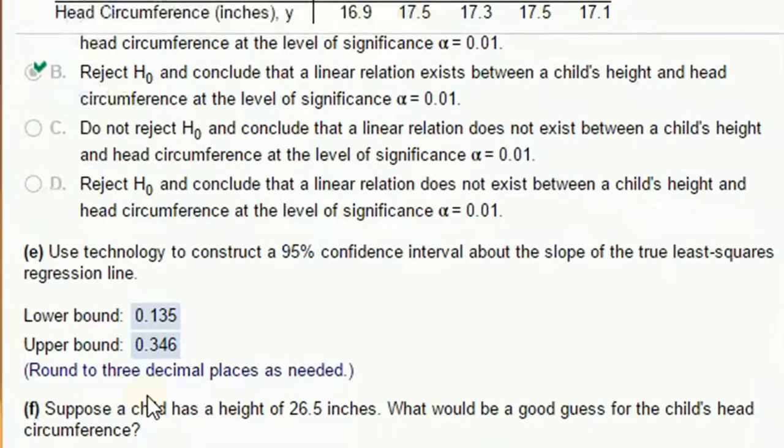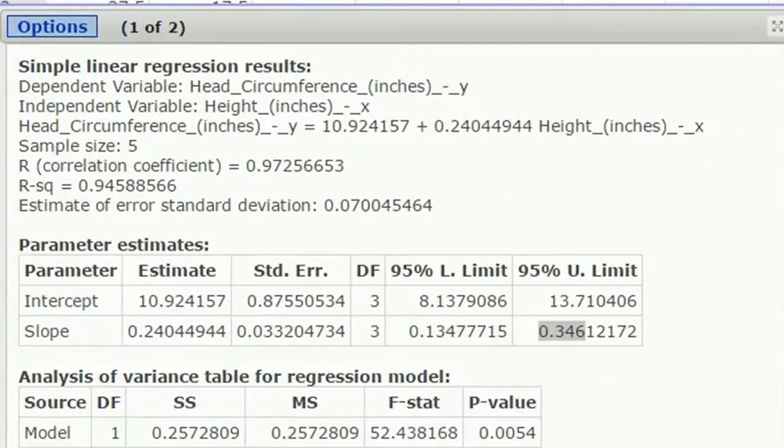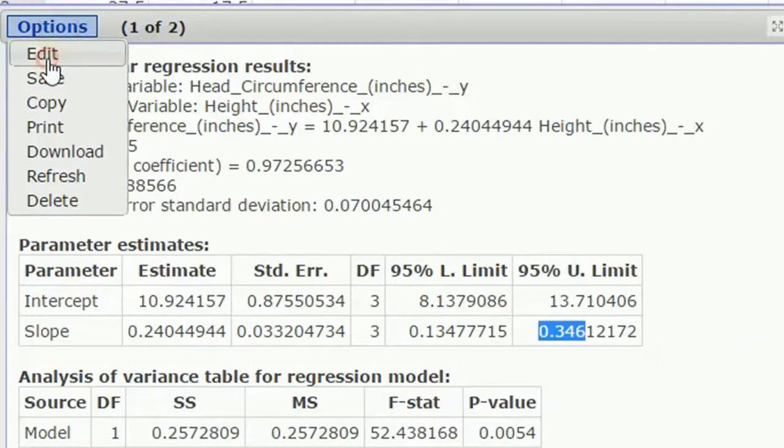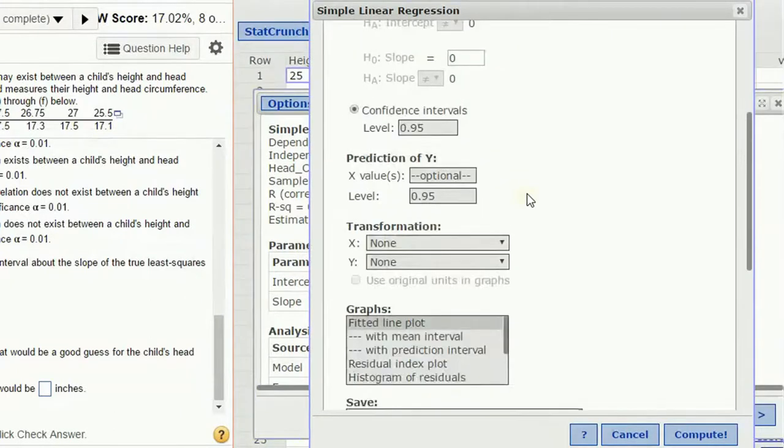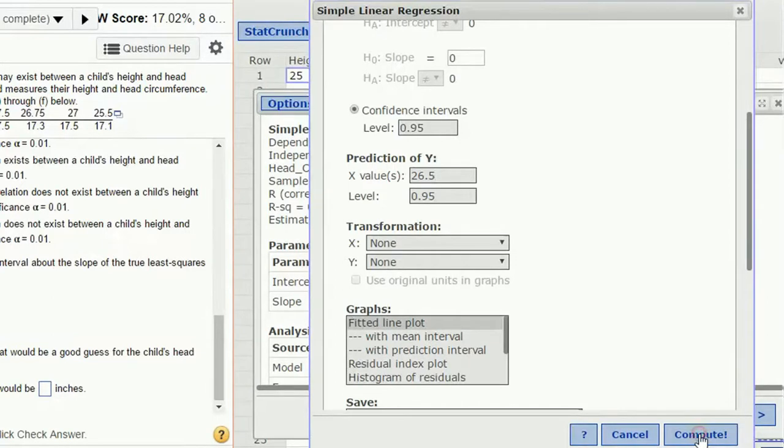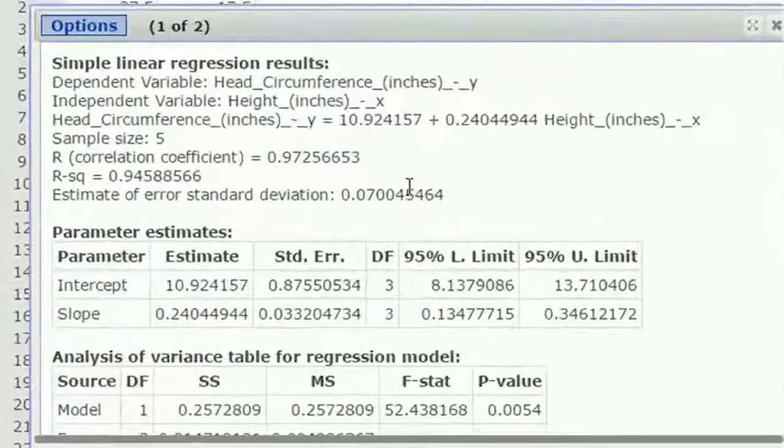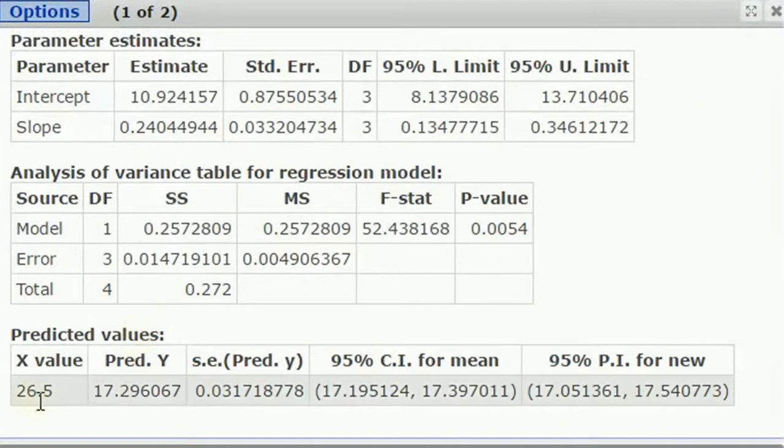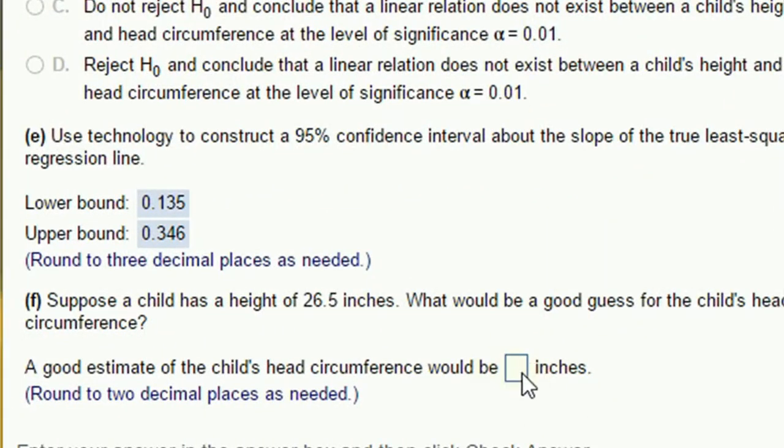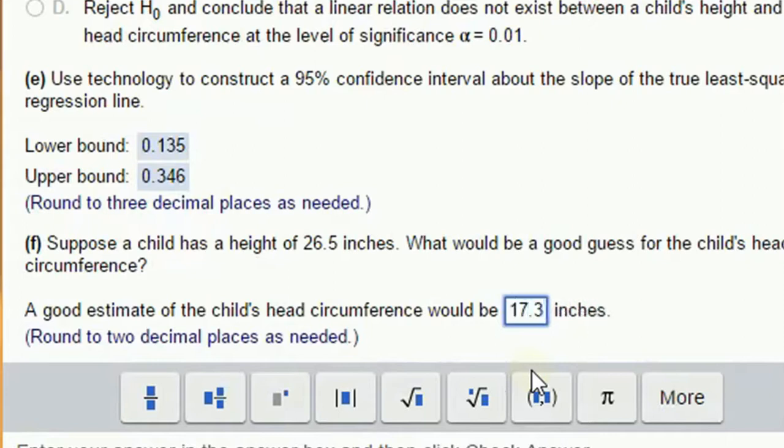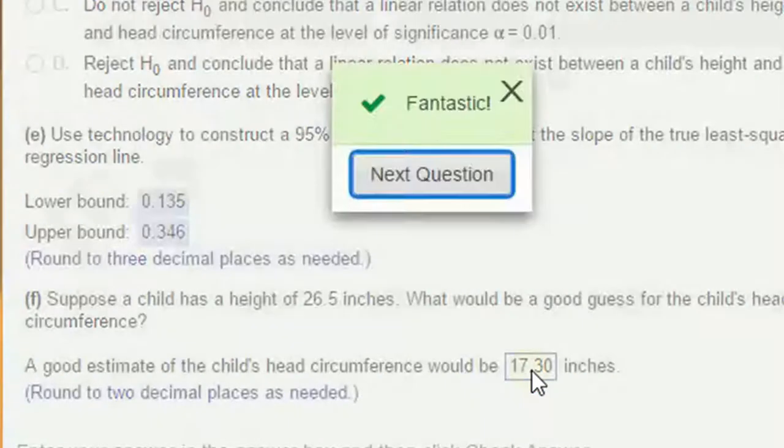Okay, great. Suppose the child has a height of 26.5. What would a good guess for the child's head circumference be? We're going to use our model to predict. And to do that, we go to options and edit. We can scroll down a little bit. And here we have prediction of Y. You can plug in a value for X. This is a height of 26.5. And we're going to just click compute. And it's going to, in addition to all the other output now, give us, if you scroll down, predicted value. For the predicted value for an X value of 26.5, we had a predicted Y of 17.296. Two decimal places? Okay. 17.29. That rounds up to 17.3. 17.30.